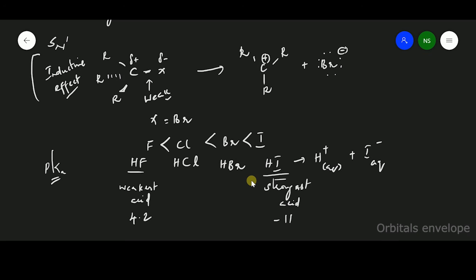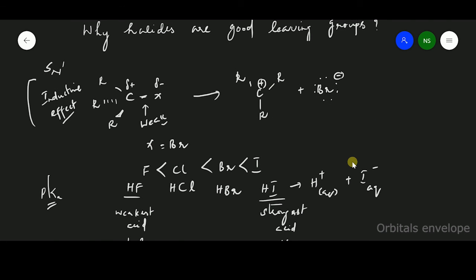Iodide is the very good leaving group among halides. But it could act as a poor nucleophile. And reverse is also possible. Whenever you find a good nucleophile, that's going to be your poor leaving group. I hope you all could understand this. Thank you.